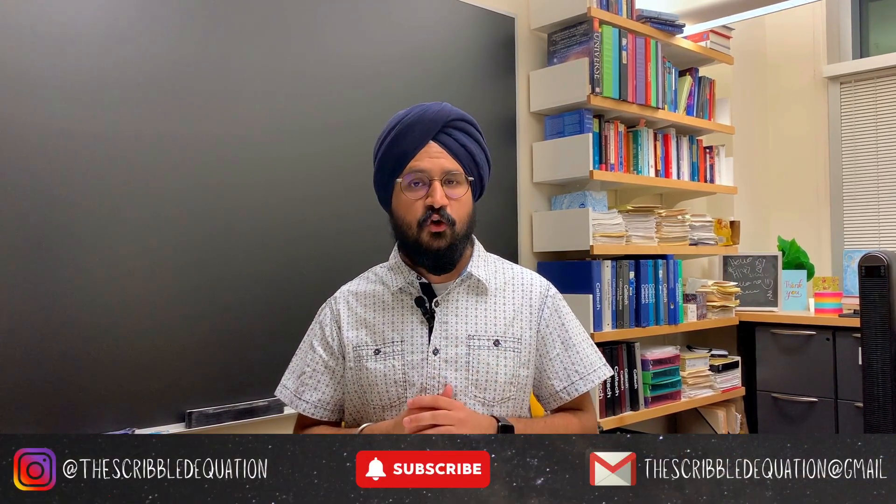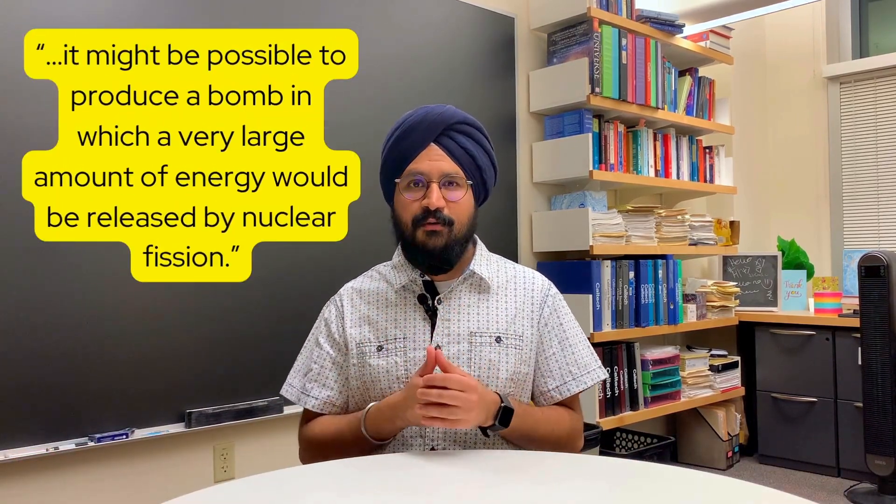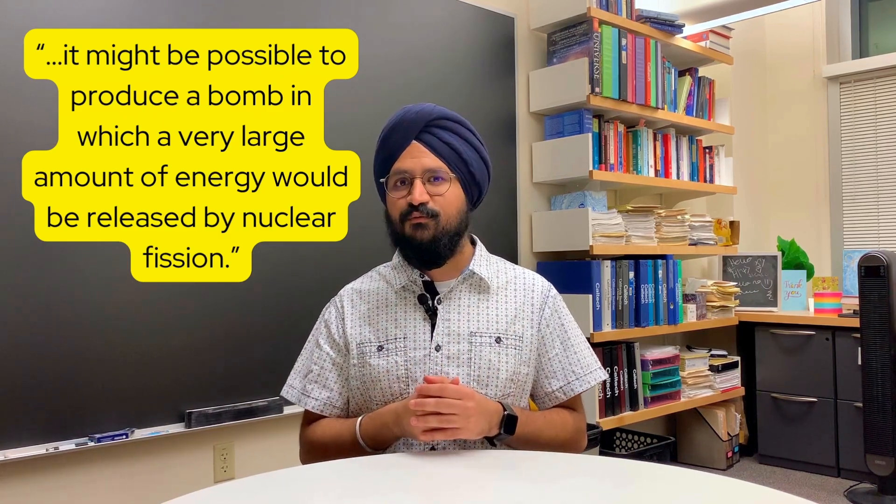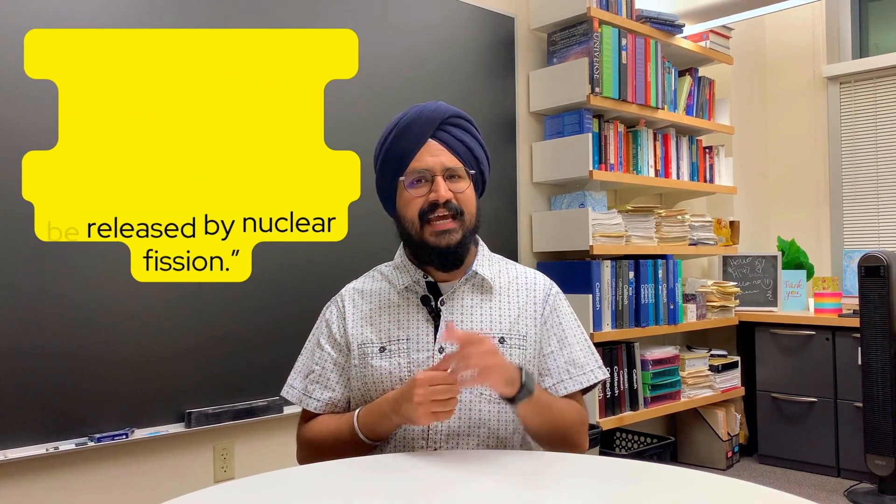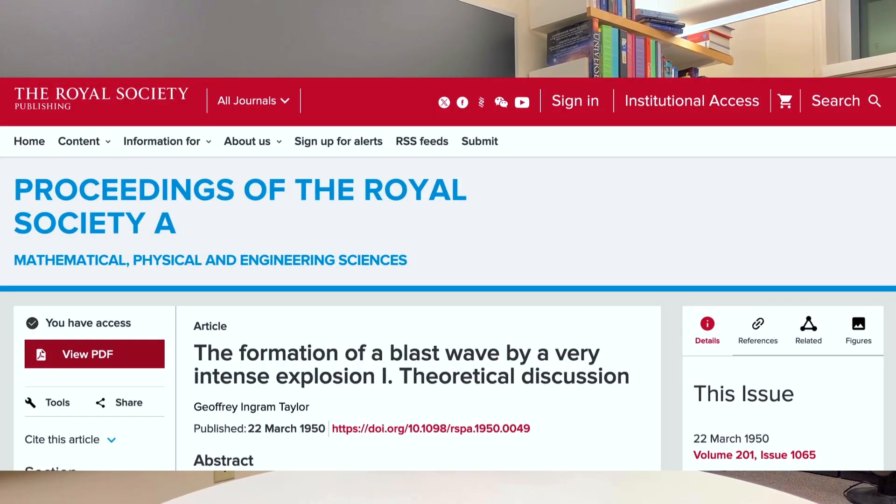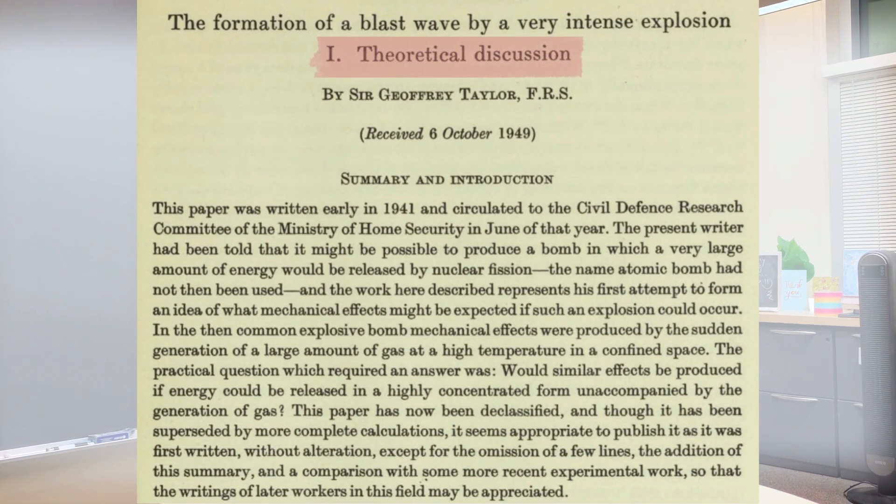Years before Trinity, in 1941, G.I. Taylor was approached by the UK Ministry of Home Security and was told that it might be possible to produce a bomb in which a very large amount of energy would be released by nuclear fission. His task was to report on the likely effect and energy yield of such a weapon. In a 1941 report to the Ministry, which was published and made public in 1949, Taylor performed a theoretical discussion of what he called the formation of a blast wave by a very intense explosion.